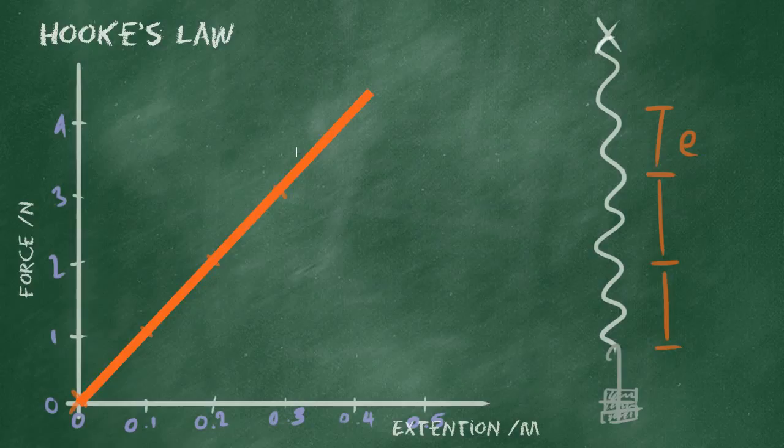And you can use this for actually predicting. If the spring continues to obey Hooke's law, continues to obey this trend, then you're going to be able to predict how much extension there is at 4 newtons, for example. And you can see along to the line and down to the extension axis, you can see 0.4 metres for 4 newtons.